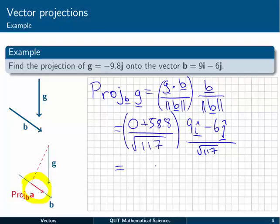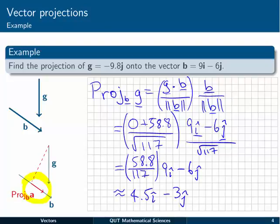The square root of 117 multiplied by itself is going to give us 117 on the bottom, 58.8 on top, and then the b vector again. So we can clean this up just by multiplying through. Plugging that into the calculator, we get approximately 4.5i, take away 3j.